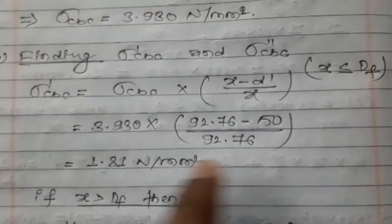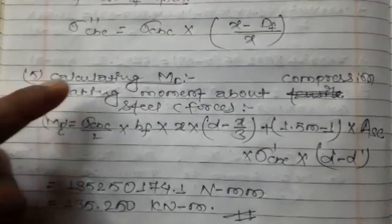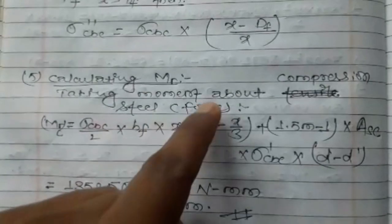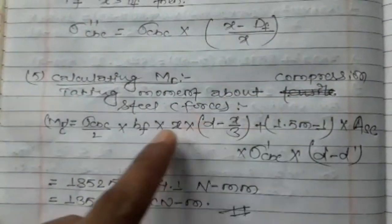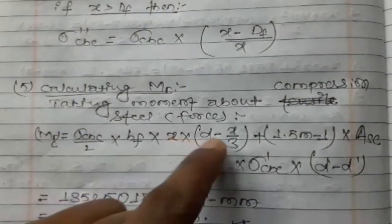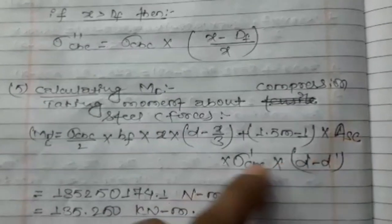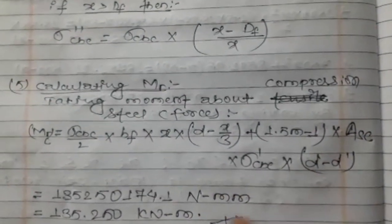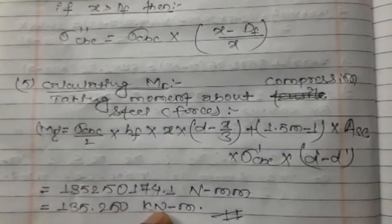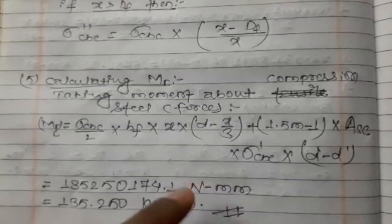Using the calculated values of σ_cbc, x_u, and d, we compute the moment of resistance. The allowable moment of resistance is 135.250 kNm.